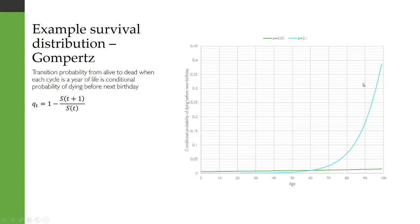And that's shown here for those two Gompertz distributions that we had before. So you'll see that when A is 0.01, that conditional probability of dying before the next birthday doesn't change very much at all over age. Whereas when A is 0.1, then we will see a much greater change over time in the conditional probability of dying before the next birthday.